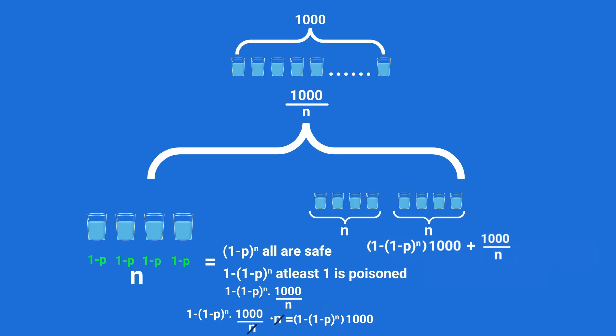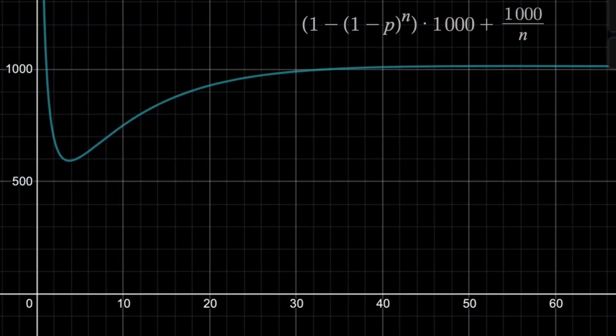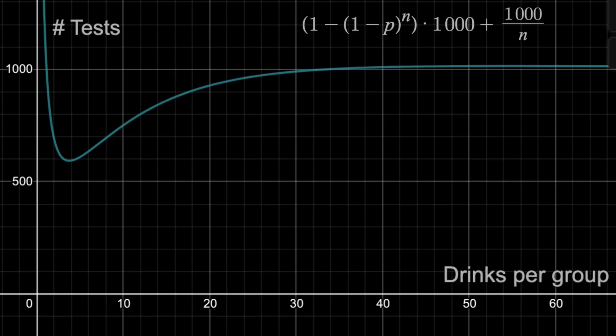And finally to put this all together, I'm going to graph this as a function of n so we can see the total number of tests on average that would need to be done. The y-axis represents that total number of tests, while the x-axis is the number of drinks per group in that initial split, and currently p is 10%.